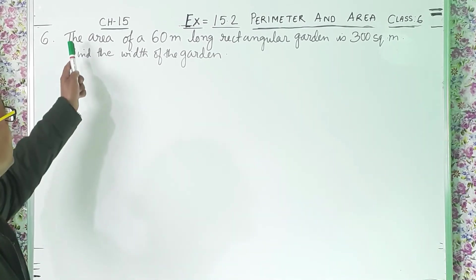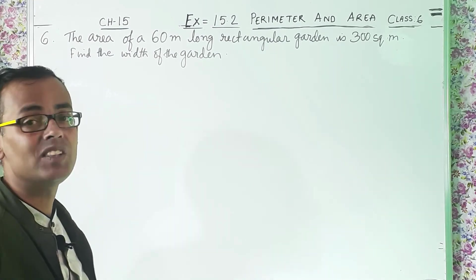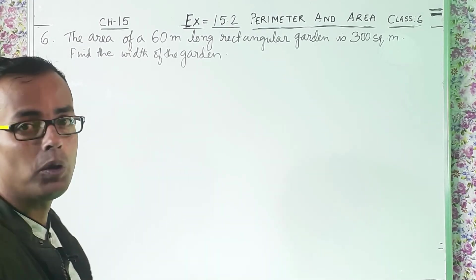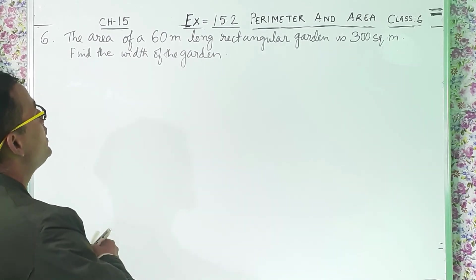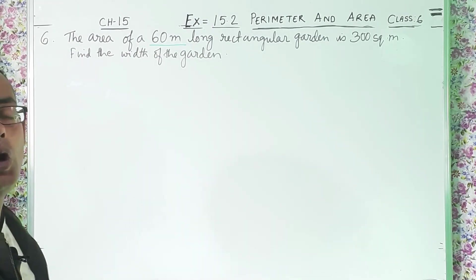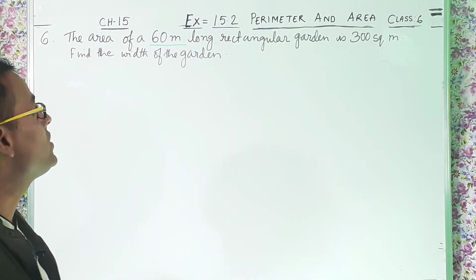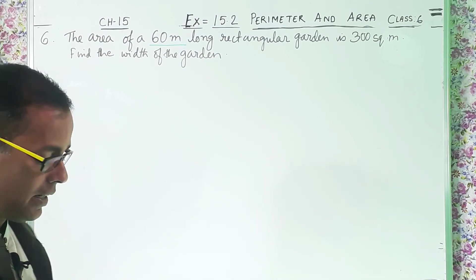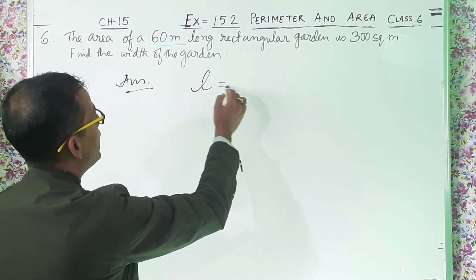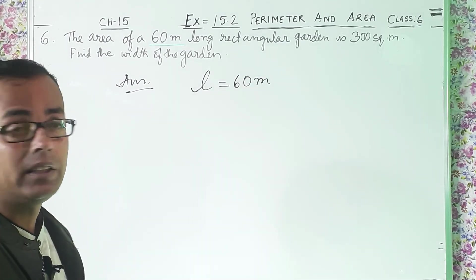Question number 6: The area of a 60-meter long rectangular garden is 300 square meters. Find the width of the garden. If I break this question — one garden is there which is 60 meters long. That means what is given to us? The length. So, starting the answer: L is given equals 60 meters — L of the rectangular garden.